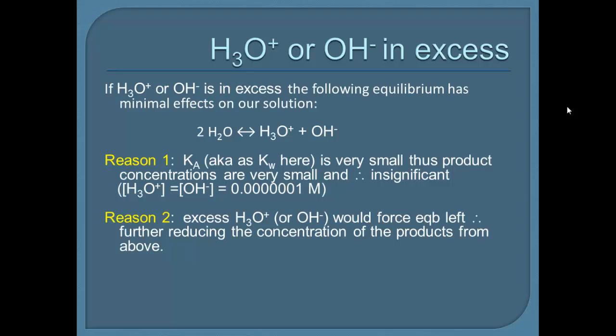Reason 2. If we add something in excess, well, let's just talk about H3O+. If we were to increase H3O+, what it would do to the above equilibrium, it would force it to the left, because H3O+ would be a stress on the equilibrium. When it moves to the left, it will reduce the amount of OH-, which was already very small. It was 10 to the power of negative 7. So, if we reduce OH- by adding excess H3O+, it will become even more insignificant. The same would be true if we added OH-, but it would be the opposite explanation.